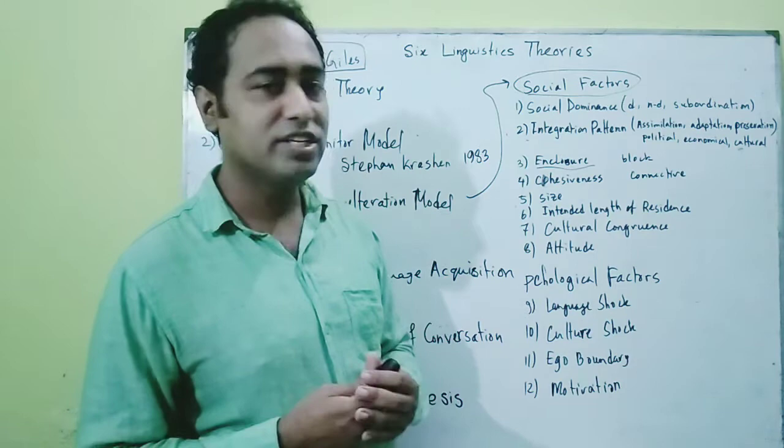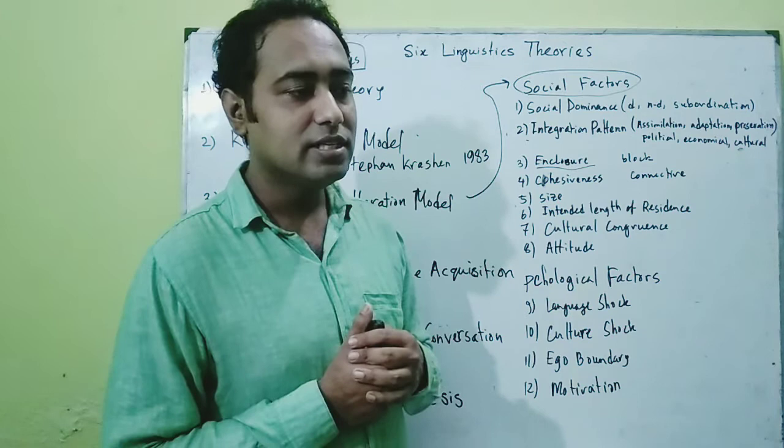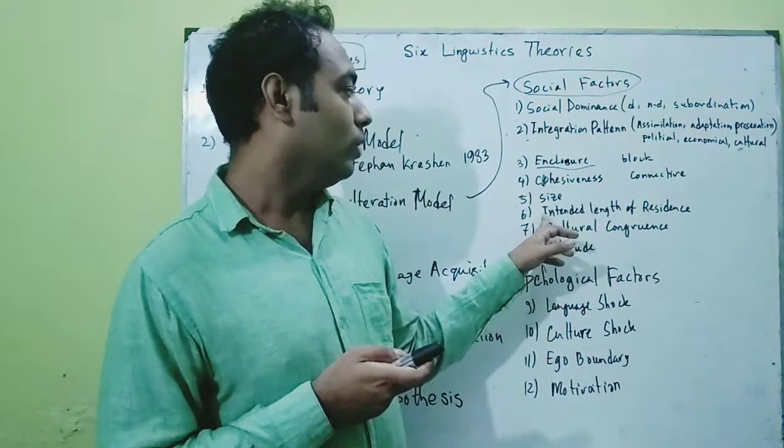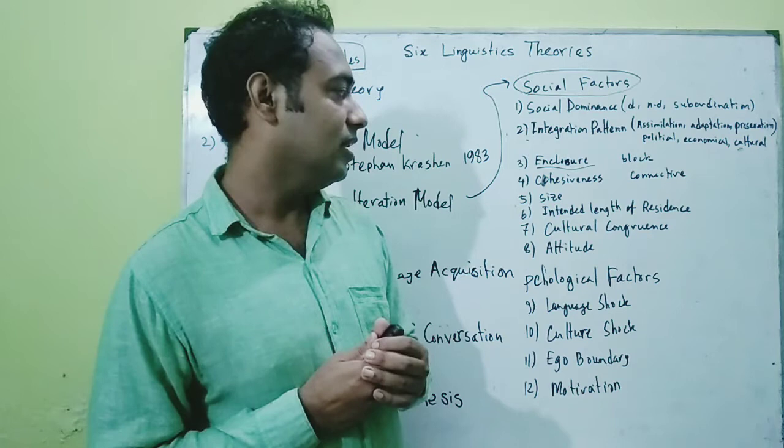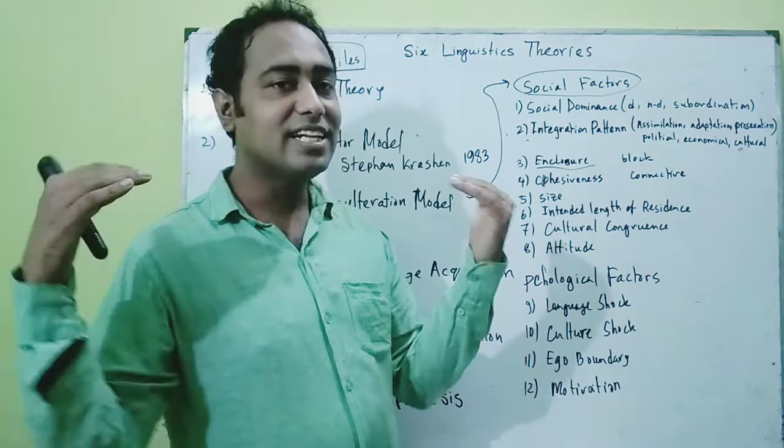The sixth factor is intended length of residence — meaning how long you are staying in a country. If I stay for seven years in a country, learning becomes very successful. When I stay for less time, like one or two years, learning becomes less successful.